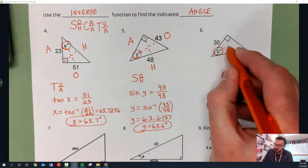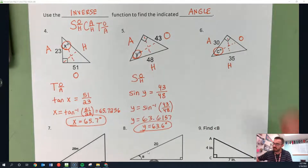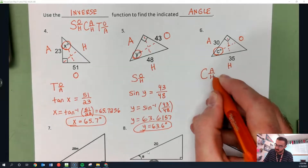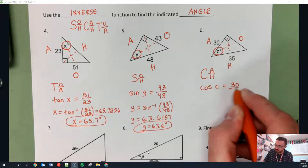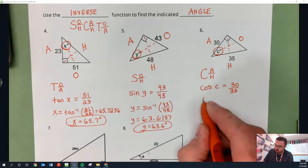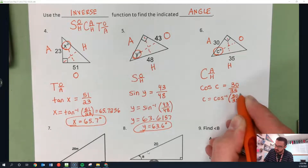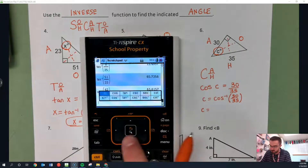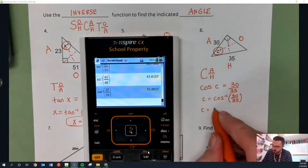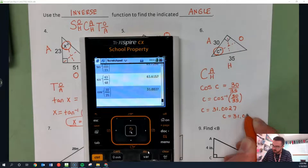This is angle C. Labeling: opposite, hypotenuse, adjacent. O is blank, so I have A and H — that's cosine. Cosine of C equals A over H, which is 30 over 35. That gives C equals inverse cosine of 30 over 35. Inverse cosine of 30 over 35 gives 31.0027, so C equals 31.0 degrees.